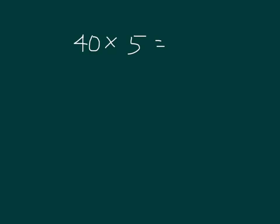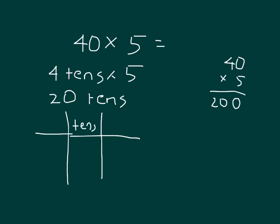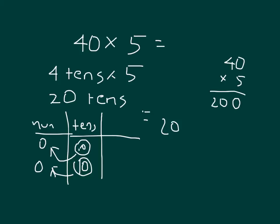Here we have 40 times 5. We could use the standard algorithm: 5 times 0 is 0, 5 times 4 is 20, so we have 200. But let's think about it conceptually. This is really just 4 tens times 5. Take 4 times 5 to get 20, so we're talking about 20 tens. 20 tens is worth 200 — we can regroup 10 of those tens to 100. So 40 times 5 equals 200.